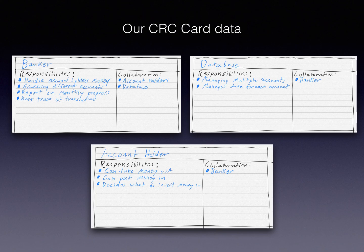For example, our first card is our banker card. We feel that the banker is an important aspect of our program and should have its own class. With this class, we expect that the banker should be able to handle all the money for the account holder, access the money for the account holder, report the account holder's monthly progress saving money, and keep track of that account holder's transaction history. We believe that this particular class should collaborate with just the account holder and with the database.